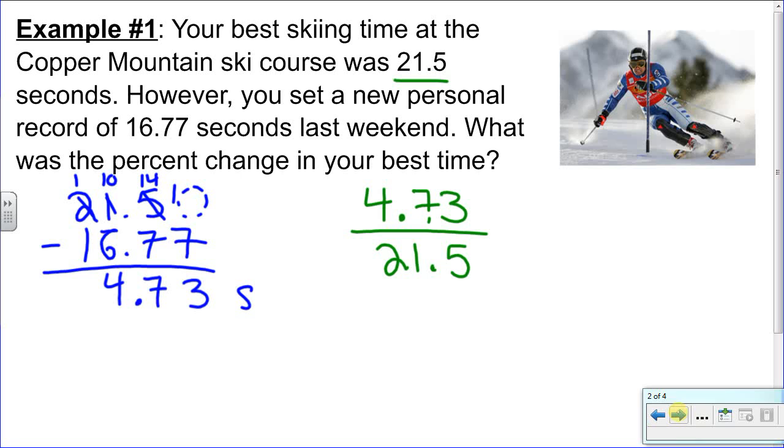To do this we're going to have to do a little division. So we'll say 4.73 divided by 21.5. Before we can actually do this division we need to swoop those decimals. I'm going to make this look nicer: 4.73, 21.5.